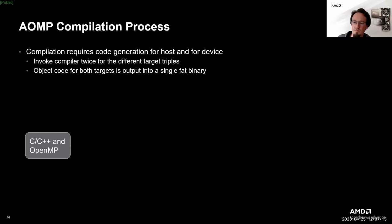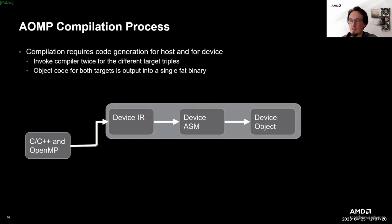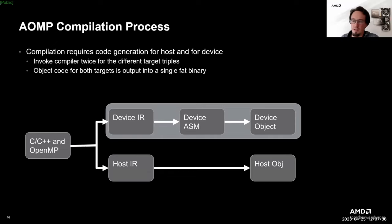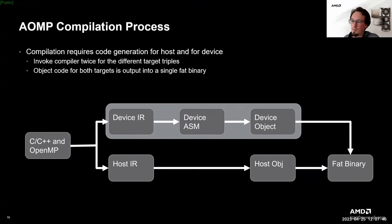If we consider a C or C++ OpenMP application, we can follow the compilation process: it goes into a device toolchain, first creating device IR (intermediate representation), which is put into the device assembler to create the device object. The same code also goes into the host IR and then into the host object. Finally, both object files are bundled together in what is typically referred to as a fat binary, which still contains code for both host and device that need to be handled separately in the subsequent link step.